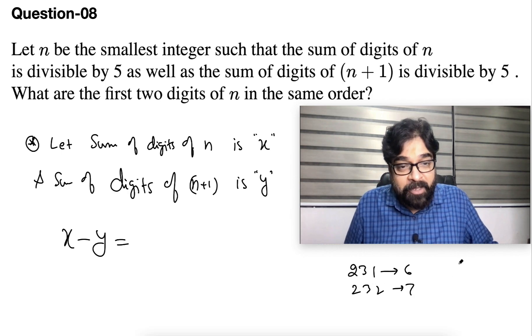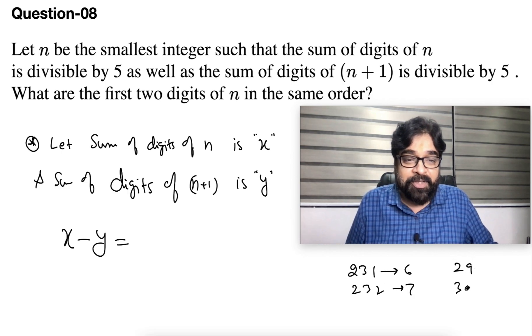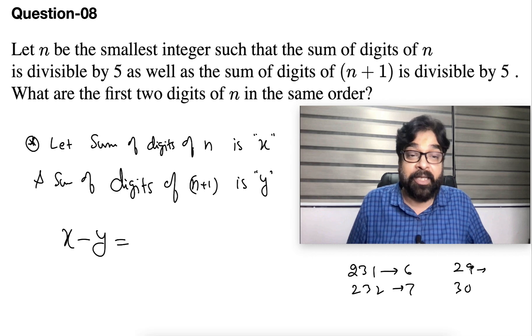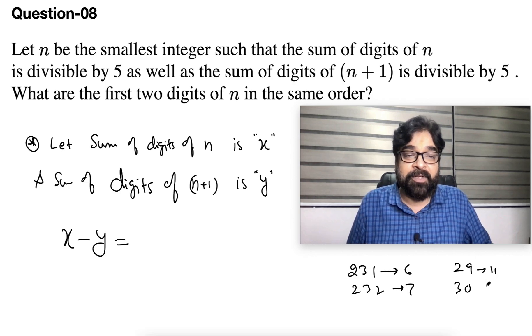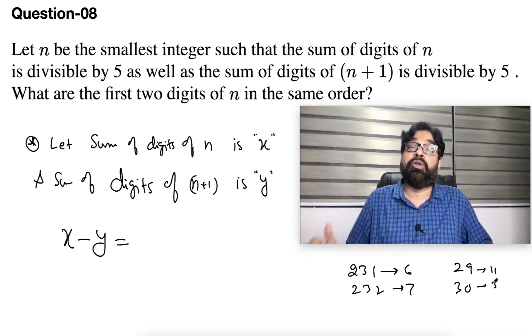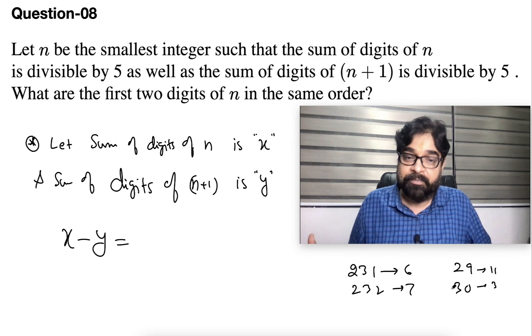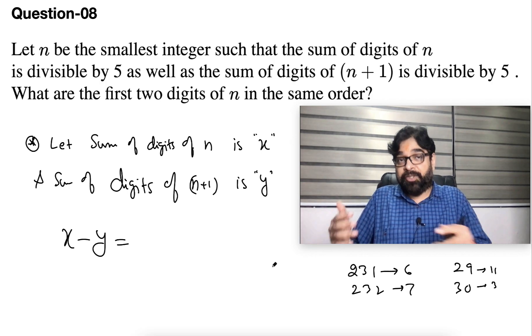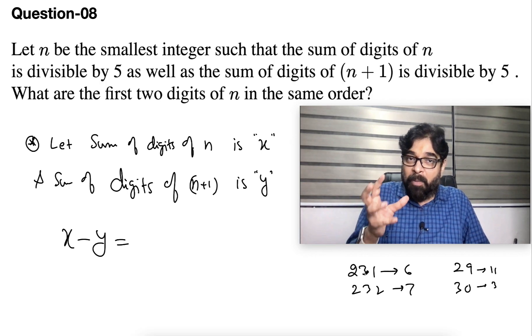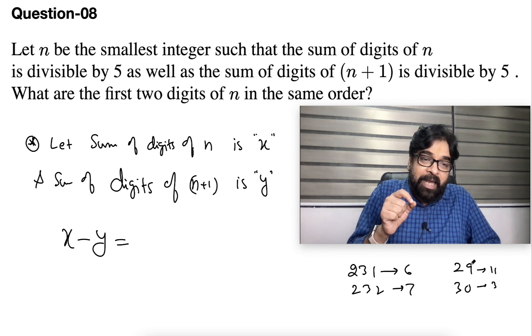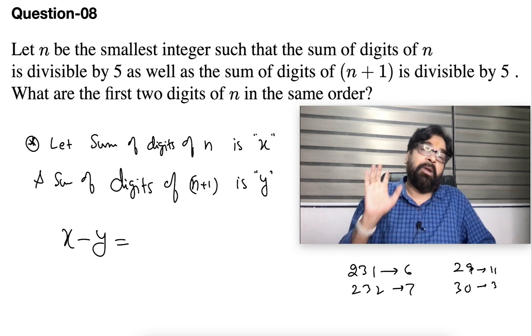No. If you take 29 and 30, what are the differences coming here? Here is coming 11 sum of digit, here sum of digit 3, so difference will be 8. If you take 3 digit number, problem where it will start? If the last digit is 9, then problem will start.